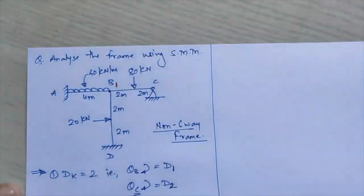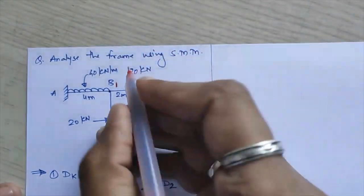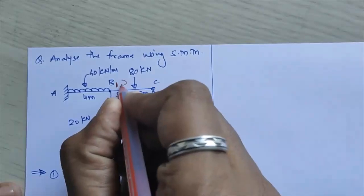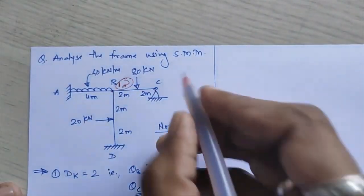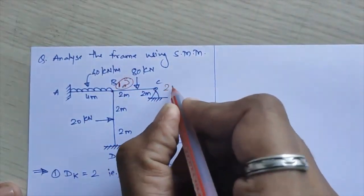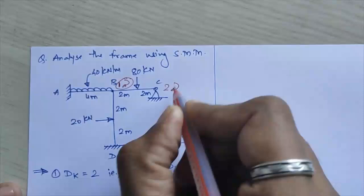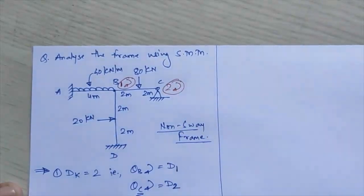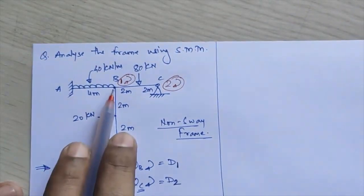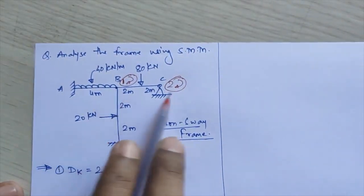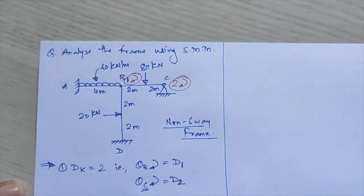The first coordinate is the rotation at point B, and the second coordinate is the rotation at point C respectively.